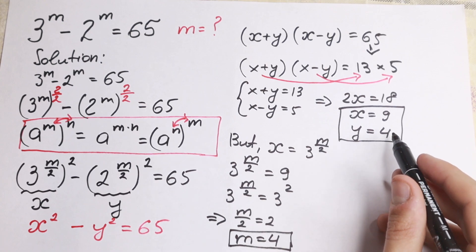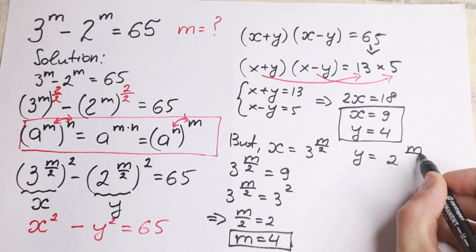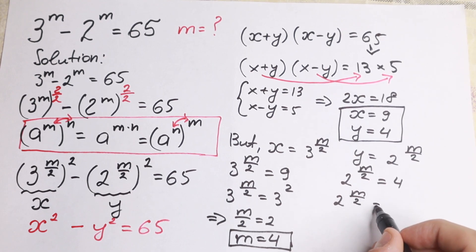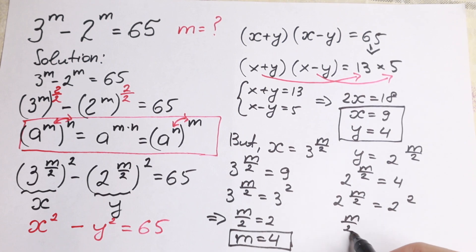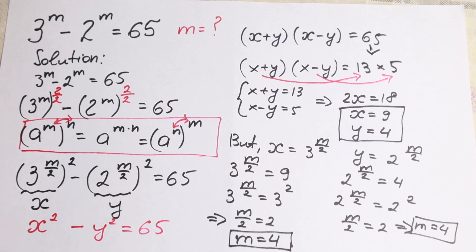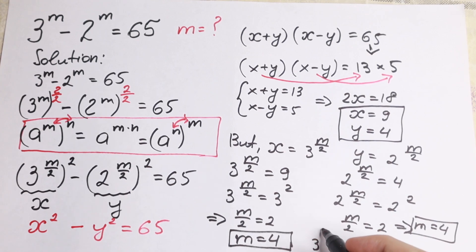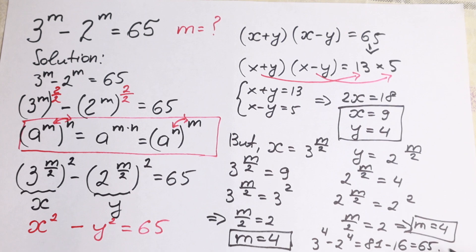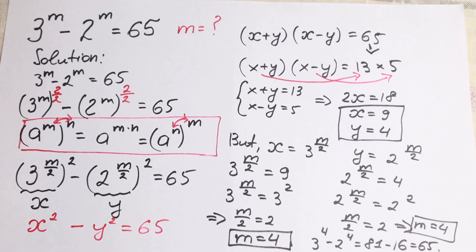We can verify using y: 2 to the power m over 2 equals 4, which is 2 squared, so again m over 2 equals 2 and m equals 4. Both sides confirm the same answer. Let's check: 3 to the fourth is 81, and 2 to the fourth is 16, and 81 minus 16 equals 65. Correct! So our answer is m equals 4. If you have questions, write them in the comments, and subscribe if you enjoy the videos!